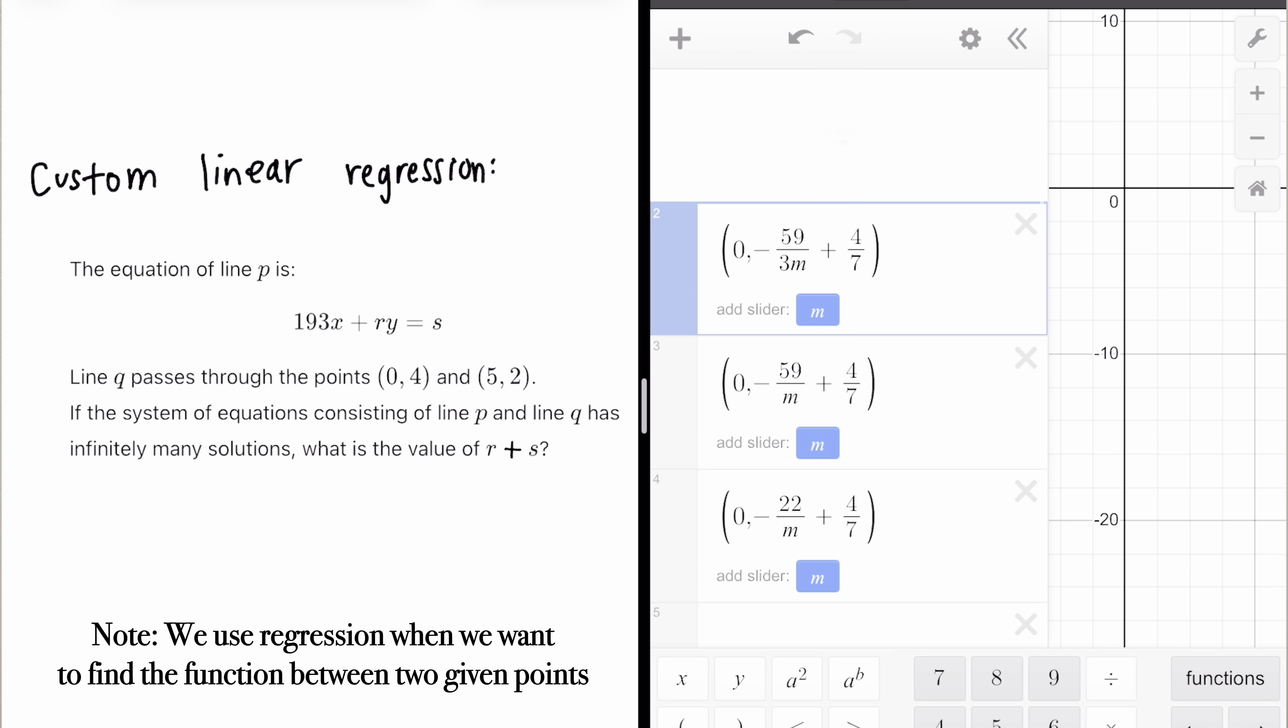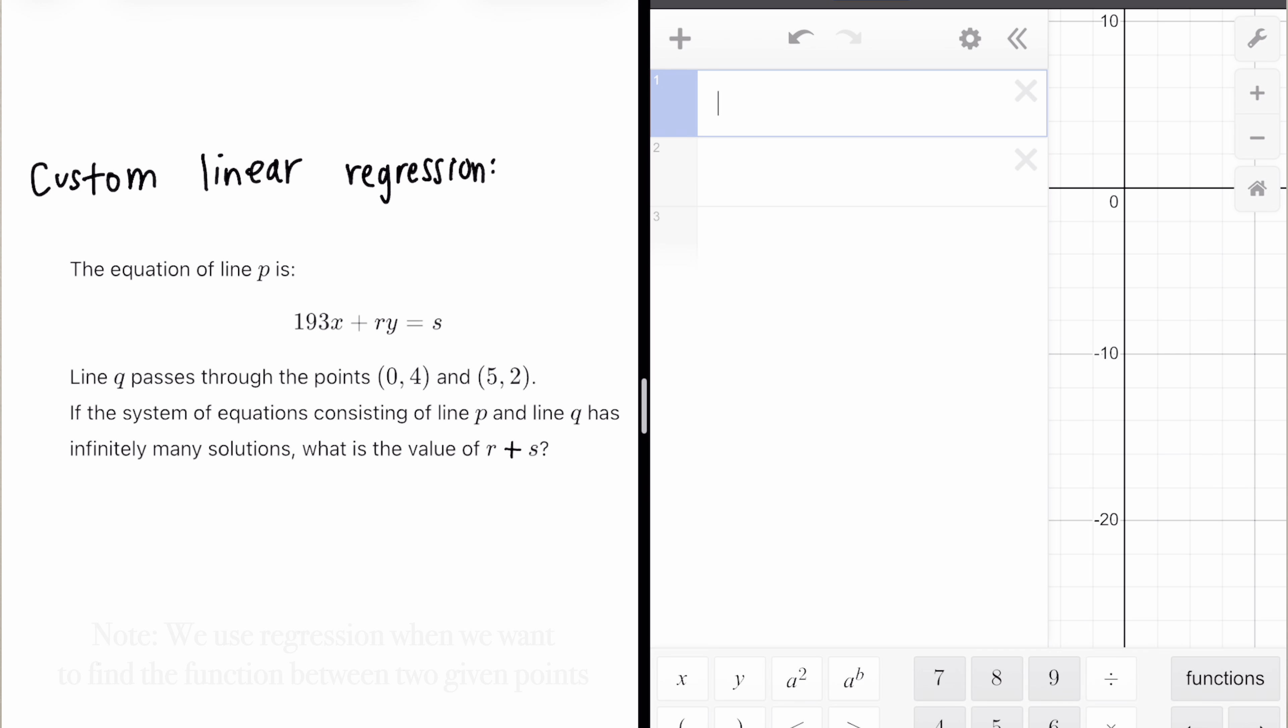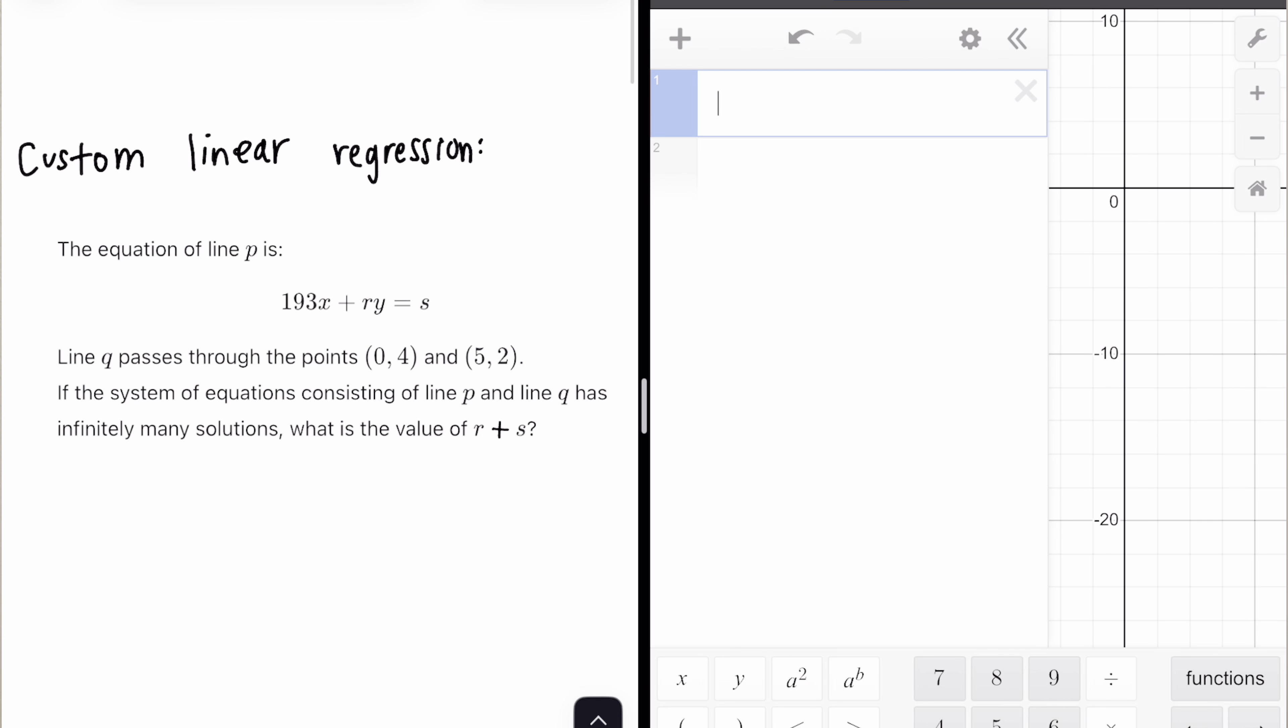Okay. Custom linear regression. Now this is pretty similar, except it's a little more advanced. So I'm going to need you to pay attention. The equation of line P is 193X plus RY equals S. The line Q passes through two points (0, 4) and (5, 2). If the system of equations consisting of line P and line Q has infinitely many solutions, what is the value of R plus S?